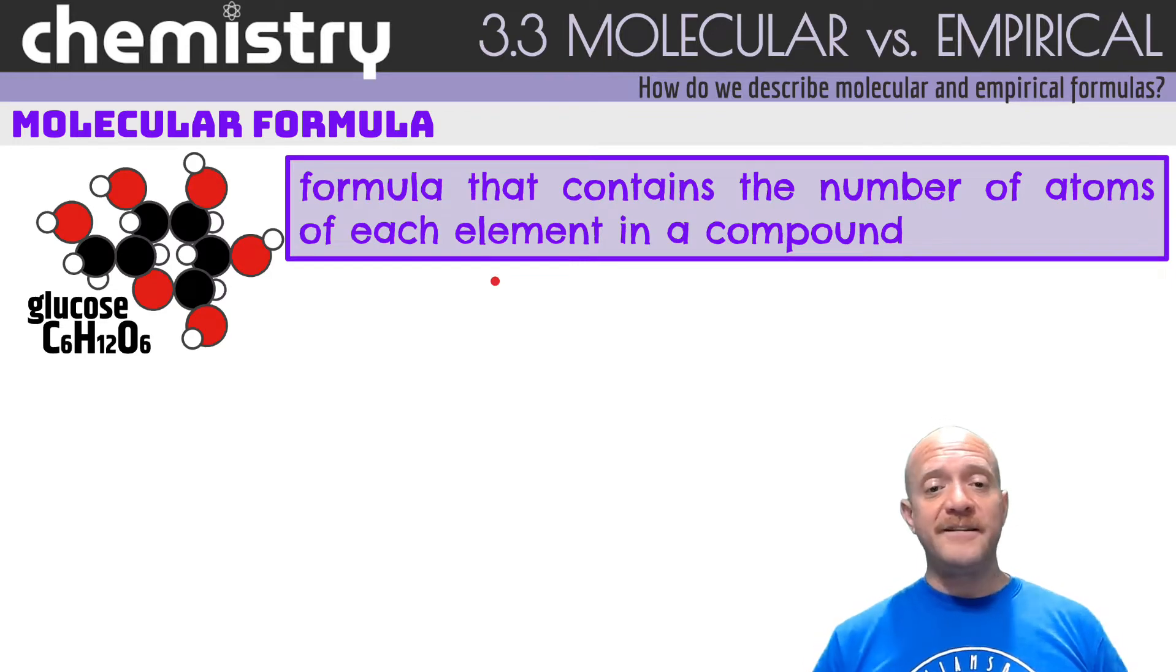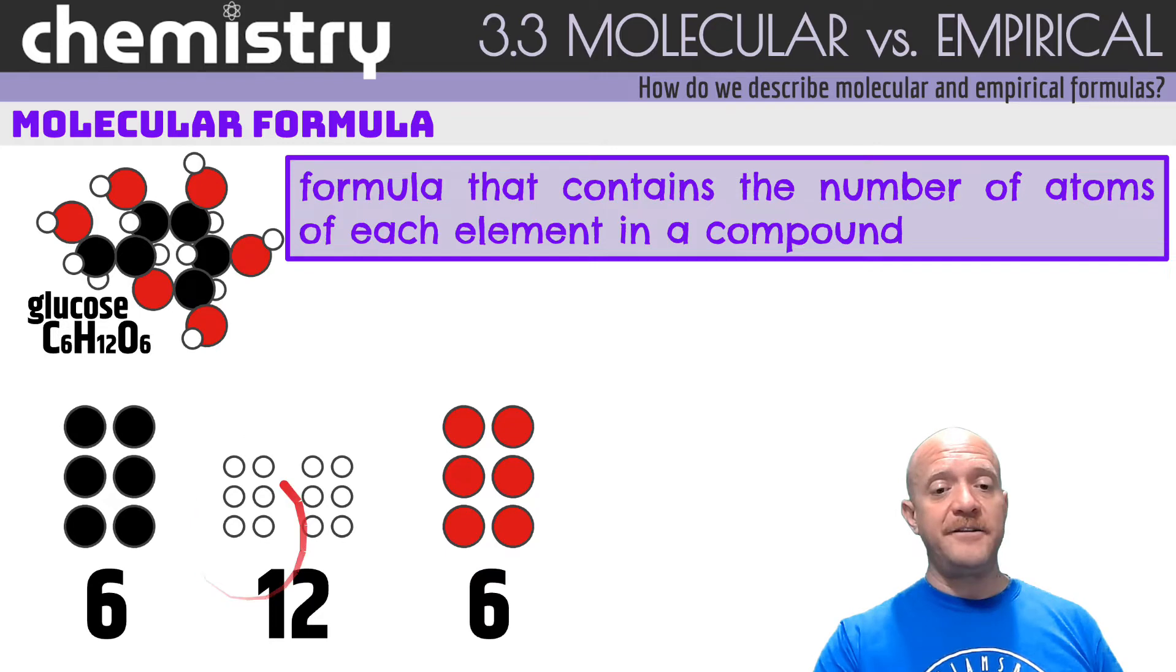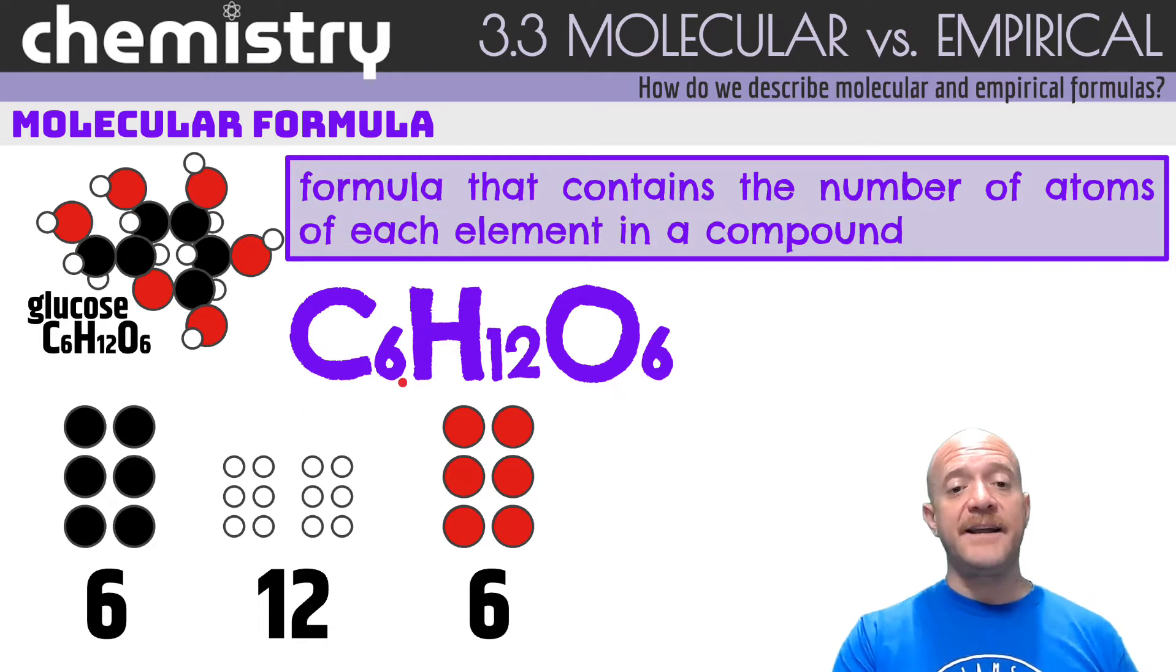So the molecular formula, simply put, it's the formula that contains the number of atoms of each element in a compound. So you're going to be looking, for example, at glucose, C6H12O6. We have 6 carbons, we have 12 hydrogens, and we have 6 oxygens. And we put them in subscripts. So we have C6, that means 6 carbons, that means 12 hydrogens, that means 6 oxygens.